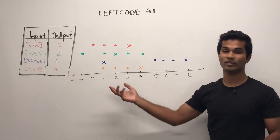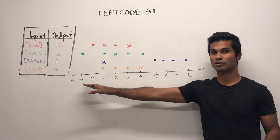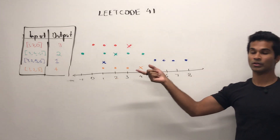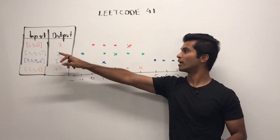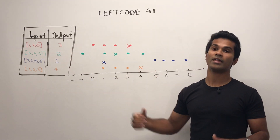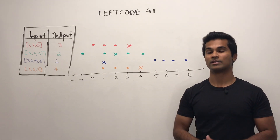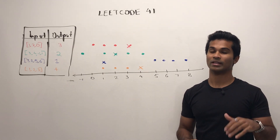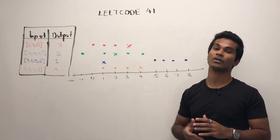Here we have a number line from say negative 1 to 8, which is the largest positive we have here. For the red example, we have 0, 1, 2, and the output is going to be 3 because that's the first number that's a positive integer that's missing from this array.